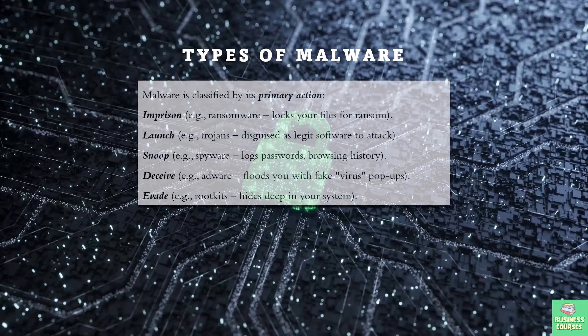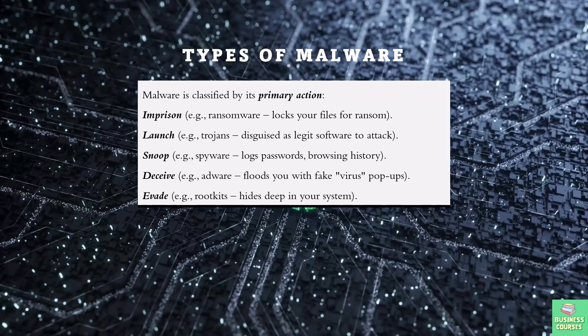Not all malware works the same way. Think of malware like a toolkit — hackers pick the right tool for the job. Need to lock down a hospital? They will probably use ransomware. Want to spy on a victim? Spyware secretly records everything they type. Some malware deceives you, like fake antivirus scams, while others evade detection. The most common type is Trojans, which disguise themselves as harmless software until they strike.